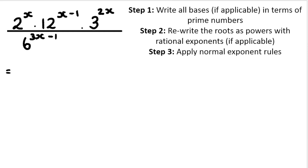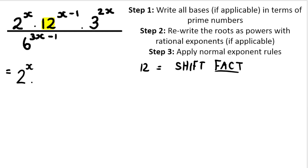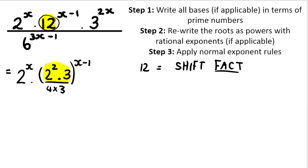So what I mean is: two to the power of x — two is a prime number. 12 can be rewritten in terms of its prime bases. If you want to know how to do that on the calculator, you press 12 equals, shift, the shift button, and you press fact — the button that says fact at the top — and you should get two to the power of two multiplied by three. Now we close the bracket and that is raised to the exponent of x minus one. It's very important to know that 12 here is raised to the exponent of x minus one.